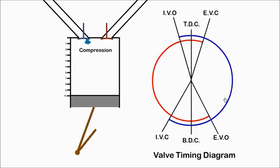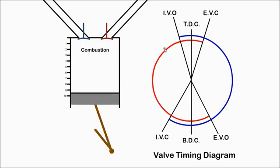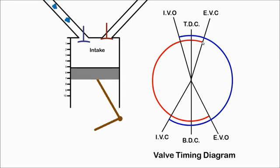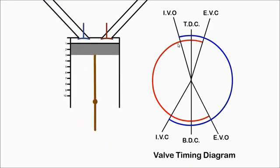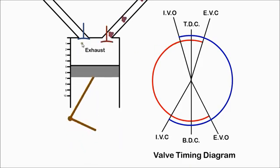Near top dead center of the exhaust stroke, both inlet and exhaust valves are open for a short period. The flow of air from inlet to outlet is called valve overlap and aids scavenging of the exhaust gas.